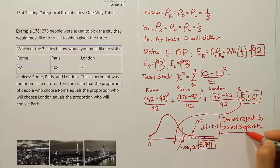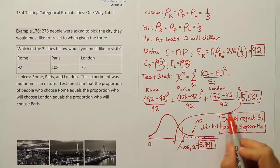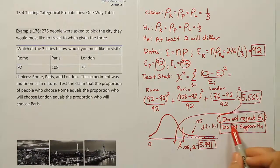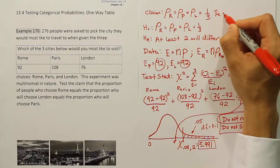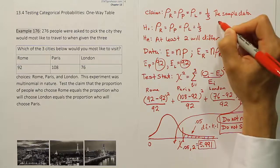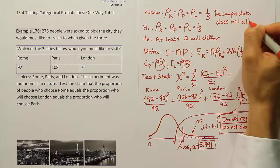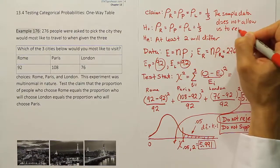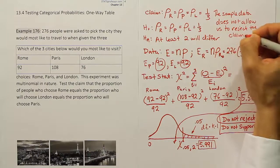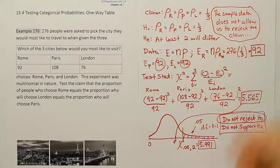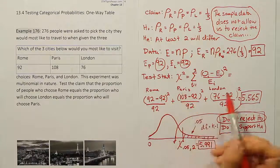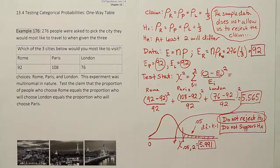These are our initial conclusions. Our claim is the same as H0, so we word our answer accordingly: the sample data does not allow us to reject the claim. The claim says that the same proportion of people want to go to Rome, Paris, or London. We saw some increase for Paris, but it wasn't large enough to conclude a significant difference between preferences for these three cities. That settles the problem.